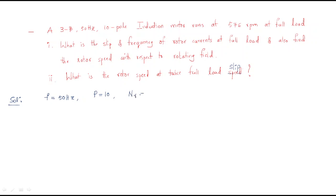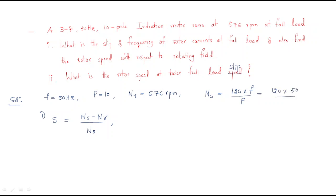The first question is the slip. The formula for slip is: s = (ns - nr) / ns. We need to find ns, the synchronous speed, using the formula ns = 120f / p. Here, frequency is 50 Hz and number of poles is 10, so ns = 120 × 50 / 10 = 600 rpm.